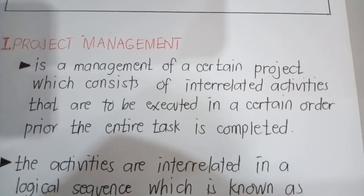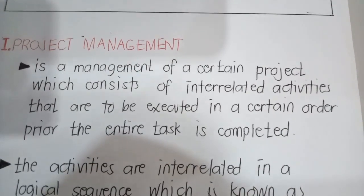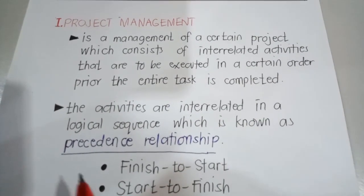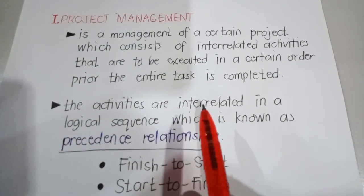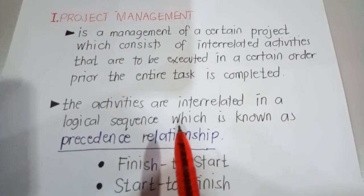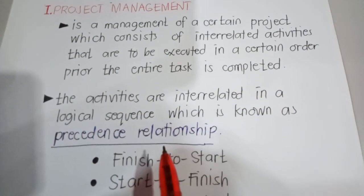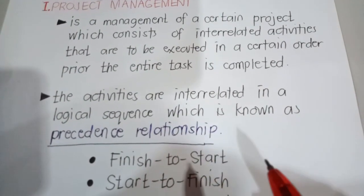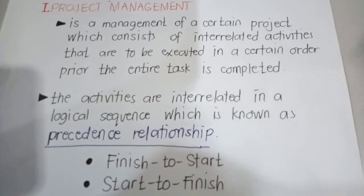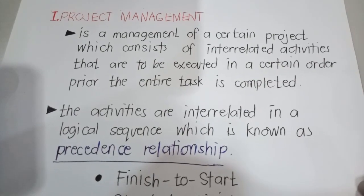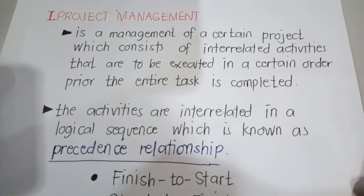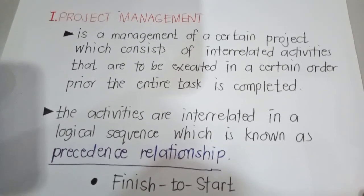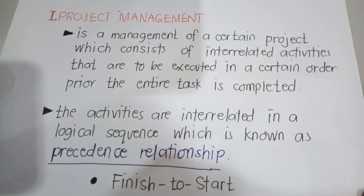So what is project management? It's not a tool or a person — instead, it's a practice. Project management can also refer to activities that are interrelated in a logical sequence, known as a precedence relationship. The most common precedence relationship is when one activity cannot start until another activity has finished. Part of the process of building a project schedule involves breaking down the work into smaller activities, or the work breakdown structure, and then sequencing the activities.